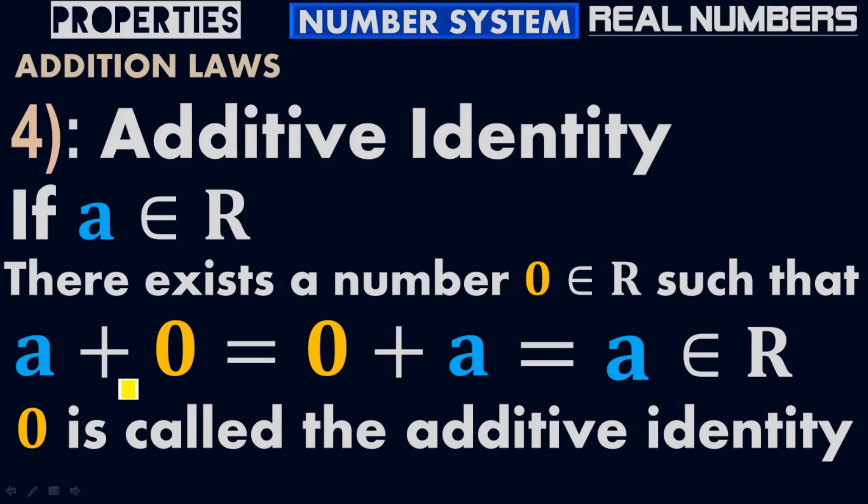What is A? A belongs to the real numbers. So 0 is called the additive identity — it doesn't affect the number A when you add it to A.